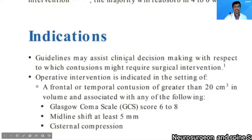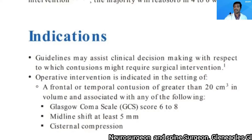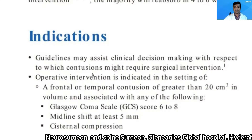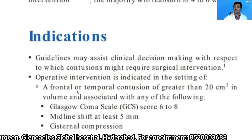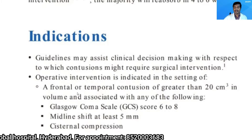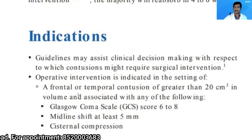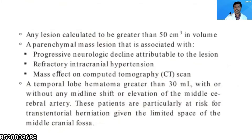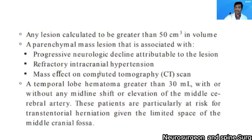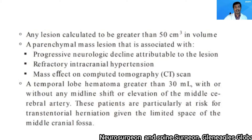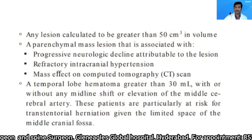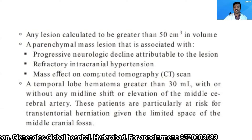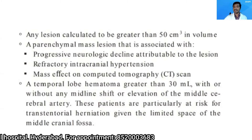The indications were covered in the previous session, but briefly: a frontal or temporal contusion greater than 20 cc in volume associated with a GCS less than 8, a midline shift of at least 5 mm, cisternal compression on CT scan, any frontal lesion greater than 50 cc in volume, or a parenchymal mass lesion of any volume causing progressive neurological decline or refractory intracranial hypertension or mass effect on CT.